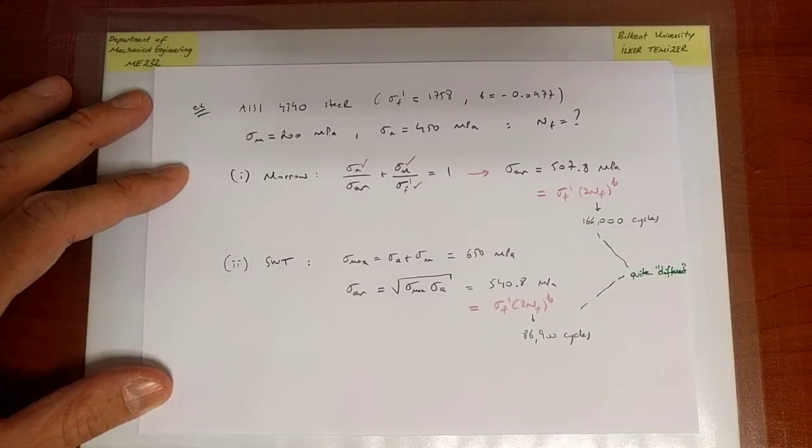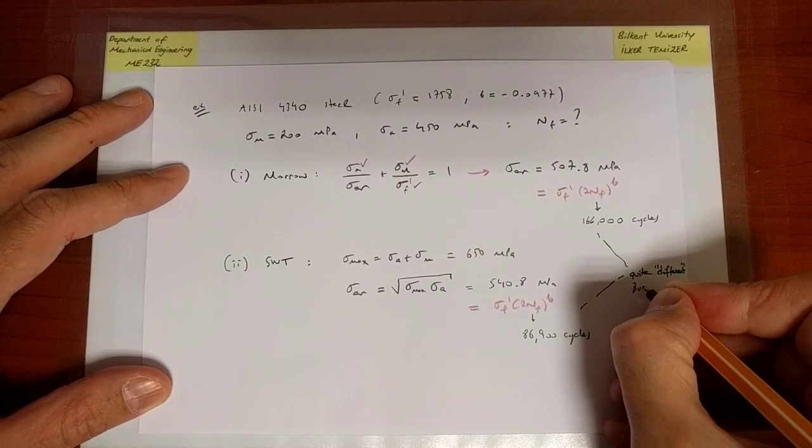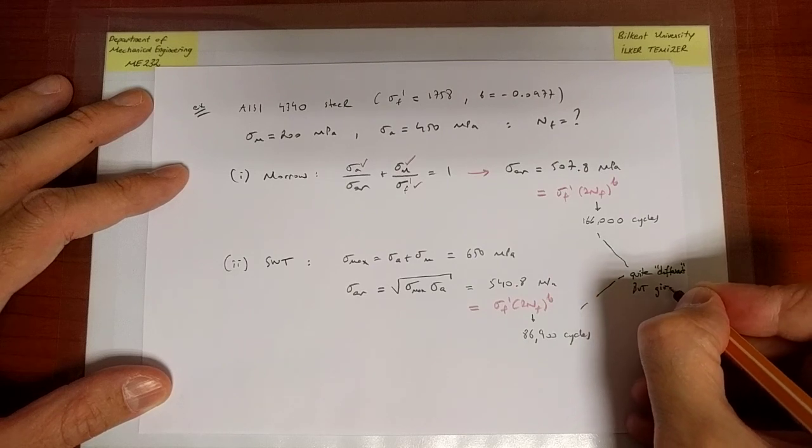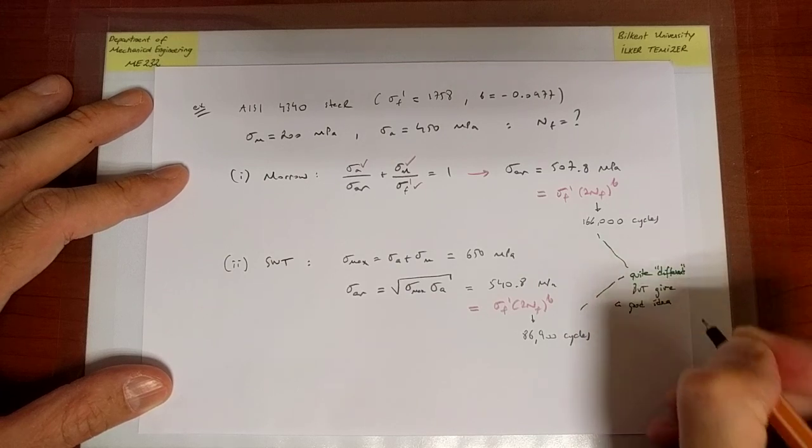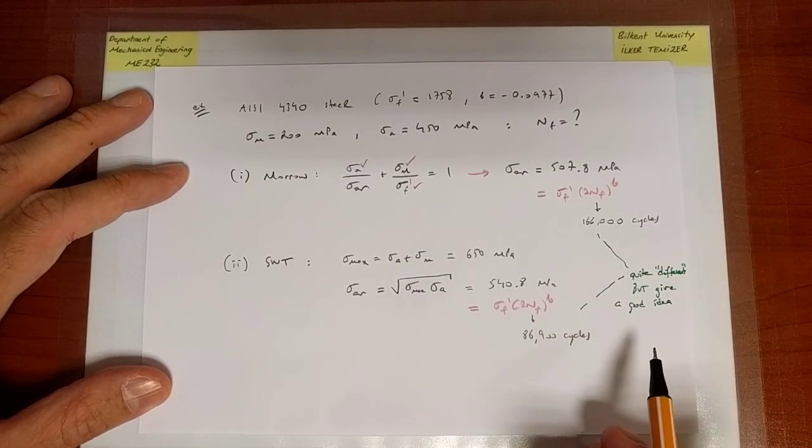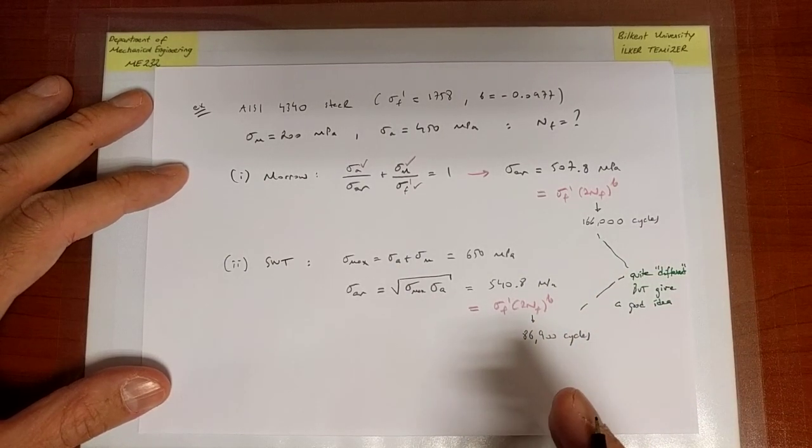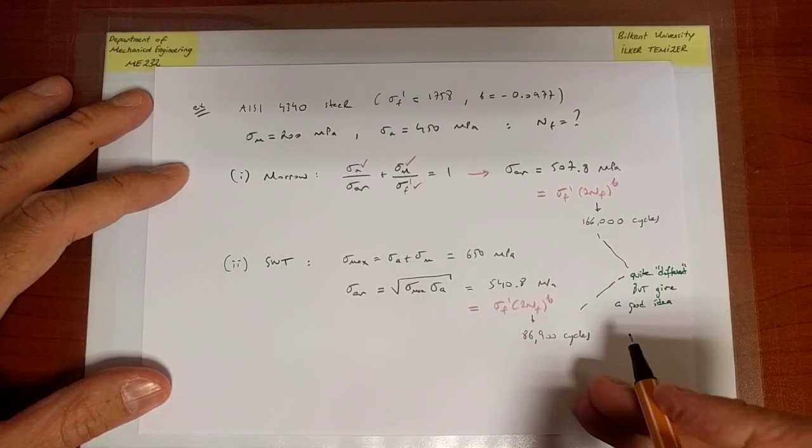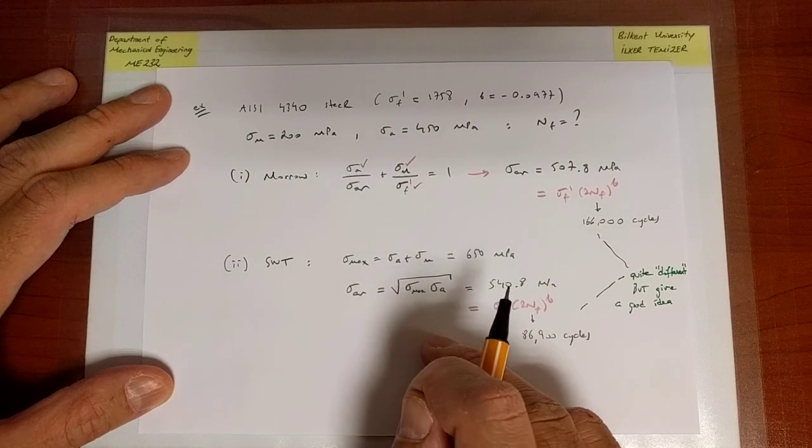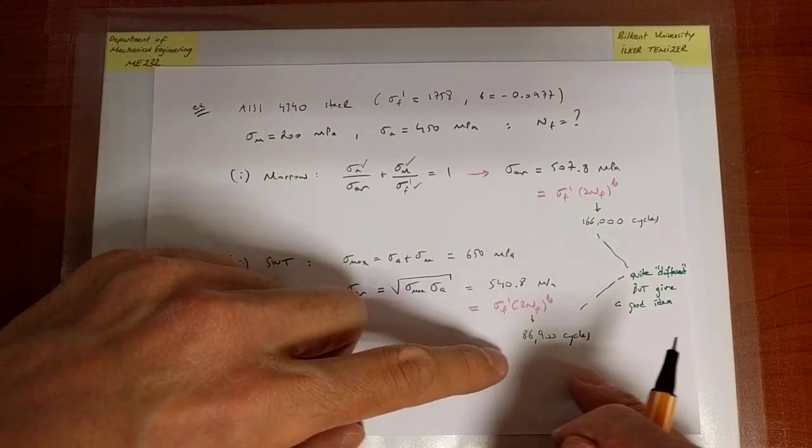But already, they give a good idea that number of cycles to failure is not 10 or 100,000, but 10 or 100 or 1,000.